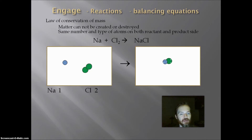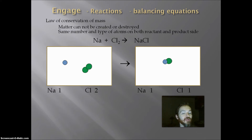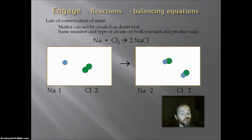On the product side, we have an NaCl, so there is one sodium and one chlorine. If I look at it the way it is written right now, it does not obey the law of conservation of mass because we have two Cls on the reactant side and only one on the product side. The only way we can remedy this is to add multiples of what we already have on the product side. So I can add a second NaCl.